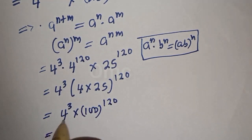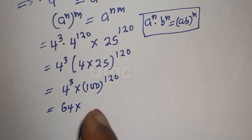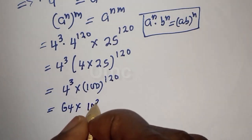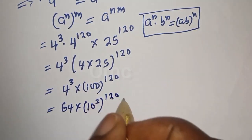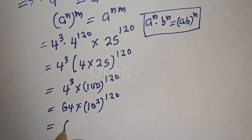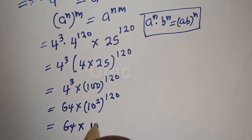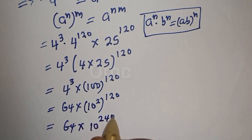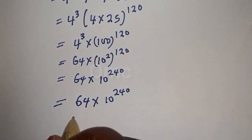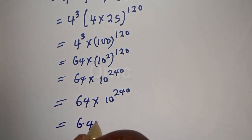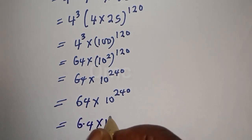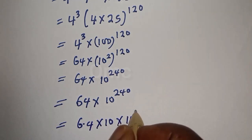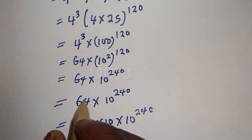4 raised to power 3 is 64, and 100 is 10 squared, so we have 64 multiplied by 10 squared raised to power 120. This equals 64 multiplied by 10 raised to power 2 times 120, that is 10 raised to power 240. This can then be written as 6.4 multiplied by 10, multiplied by 10 raised to power 240, since the decimal point has been shifted.